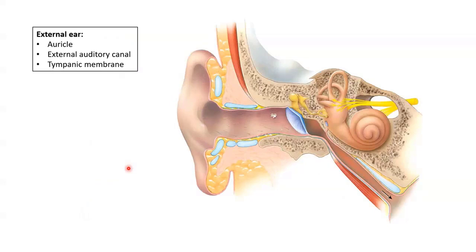Focusing now on the external ear, which consists of the auricle, the external auditory canal, and the tympanic membrane. The auricle, which is sometimes also known as the pinna, is a flap of elastic cartilage shaped a little bit like the end of a trumpet and covered by skin. Ligaments and muscle attach the auricle to the head. Our auricle is this external portion here.